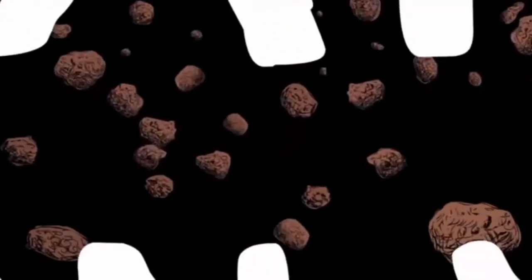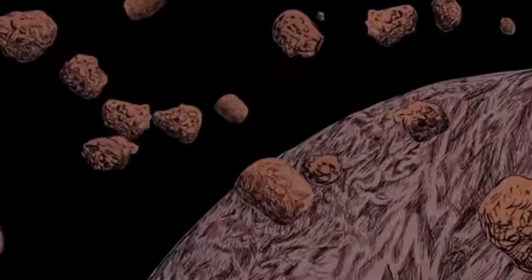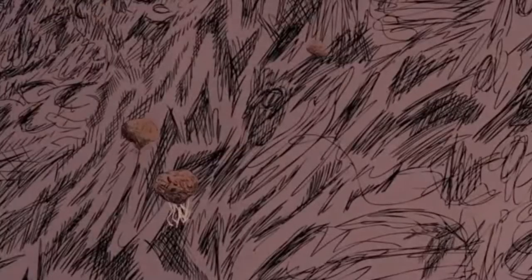When the Earth first formed, the solar system was a violent place. Giant hunks of rock, metal, and ice slammed into the Earth's surface.